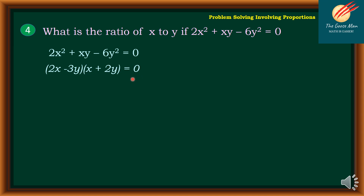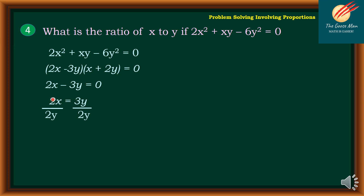Using the zero property, I have 2x minus 3y equals 0. Isolate 3y: 2x equals 3y. Adding 3y to both sides, then dividing both sides by 2y, I get x over y equals 3 over 2. So this is the ratio of x to y, which is equal to 3 over 2.